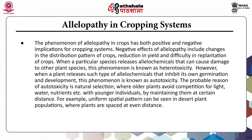The phenomena of allelopathy in crops has both positive and negative implications for cropping systems. Negative effects include changes in the distribution pattern of crops, reduction in yield and difficulty in replantation. When a particular species releases allelochemicals that damage other plant species, this is termed heterotoxicity. When a plant releases allelochemicals that inhibit its own germination and development, this is known as autotoxicity. The probable reason for autotoxicity is natural selection, where older plants avoid competition for light, water and nutrients with younger ones by maintaining them at a certain distance.